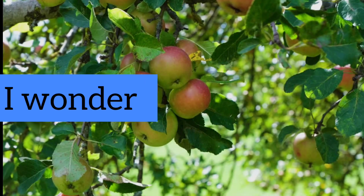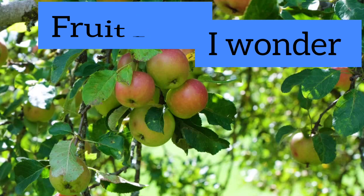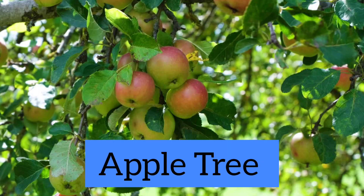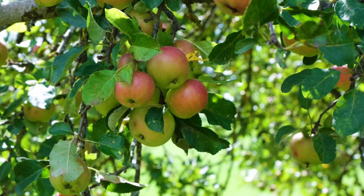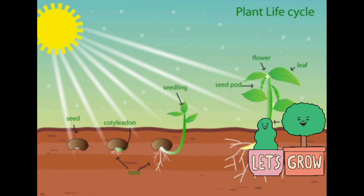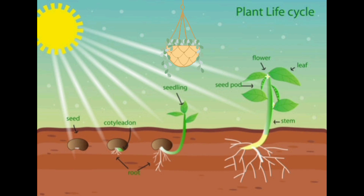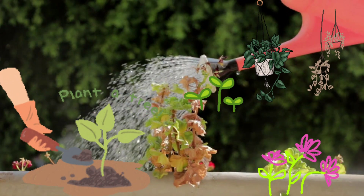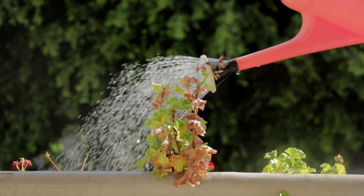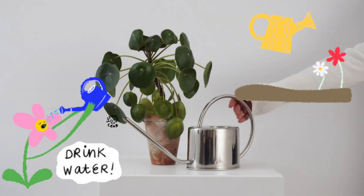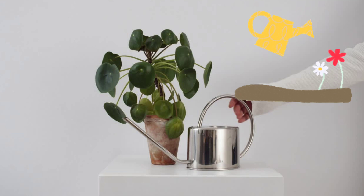I wonder, how the fruit appears on the tree. A seed germinates with the help of air, water, and sunlight. It is essential for a plant to grow. Take care of plants, children — take care of nature, keep watering plants.